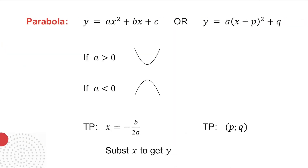With a parabola, there are two forms of the general equation. The first one: y equals ax squared plus bx plus c, and the second: y equals a bracket x minus p, all squared, plus q. In both forms, if a is positive, the arms go up, and if a is negative, the arms go down.